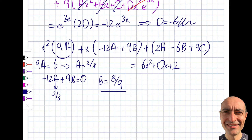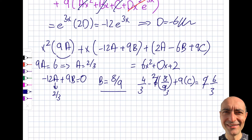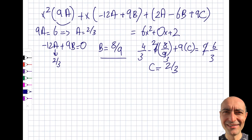For the constant term: 2a minus 6b plus 9c equals 2. Substituting — 2·(2/3) is 4/3, minus 6·(8/9) is 16/3, so 4/3 minus 16/3 is minus 12/3, move that to the right side to get 9c = 2 + 4 = 18/3·... working it through gives c equals 2/3.